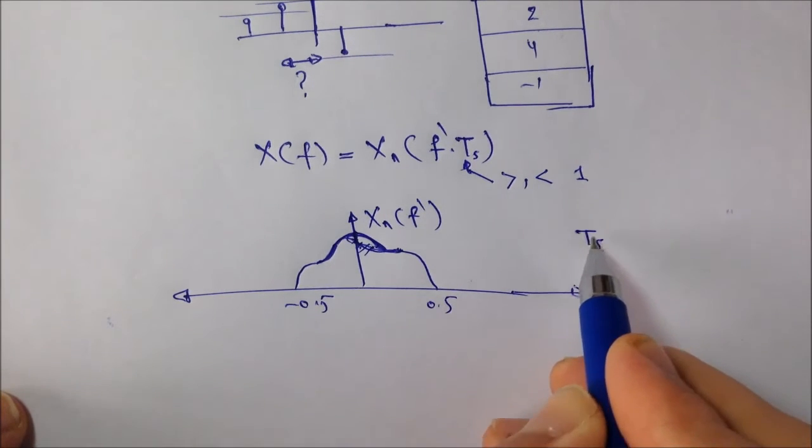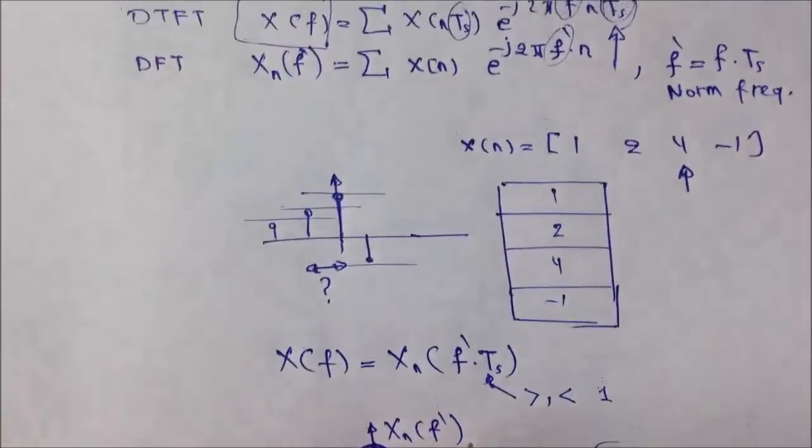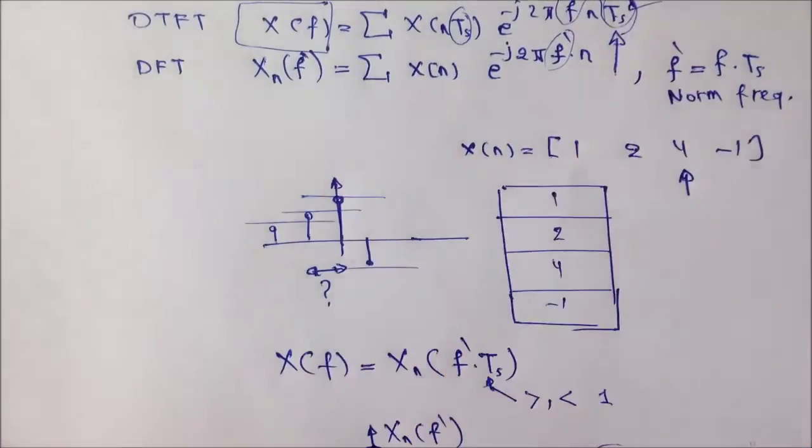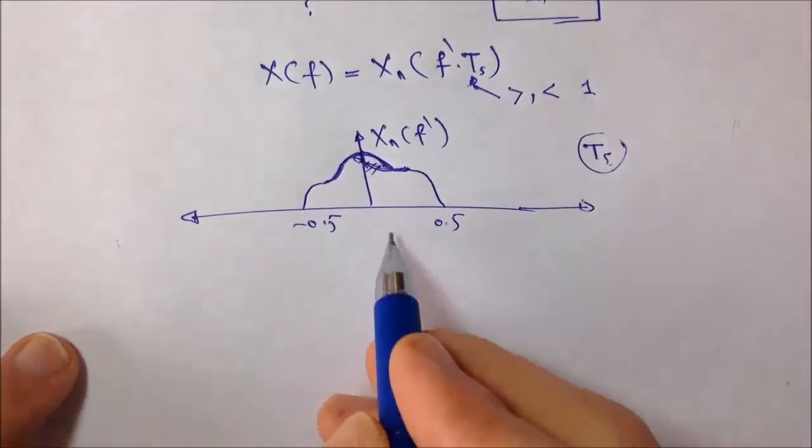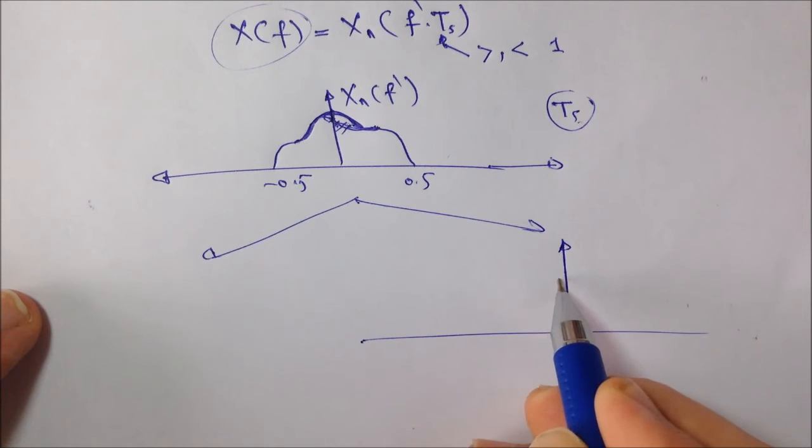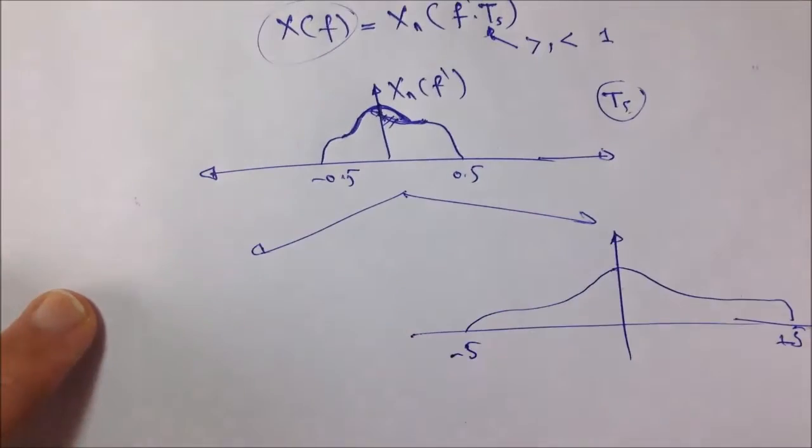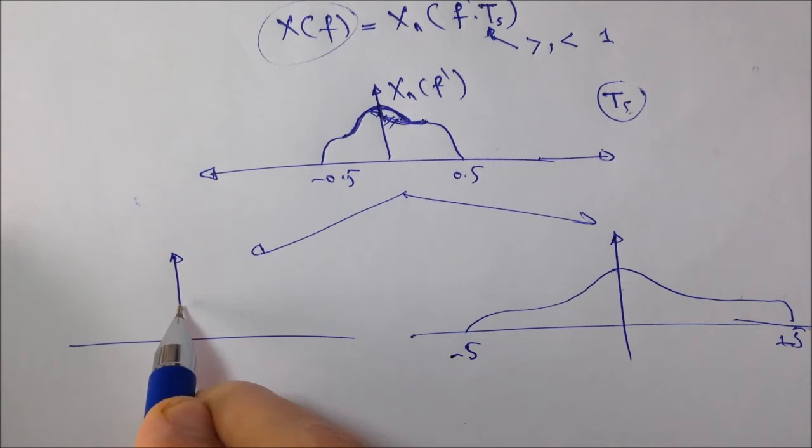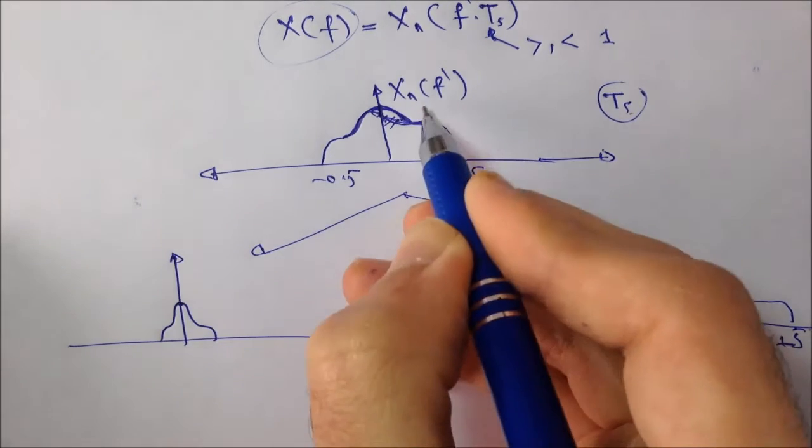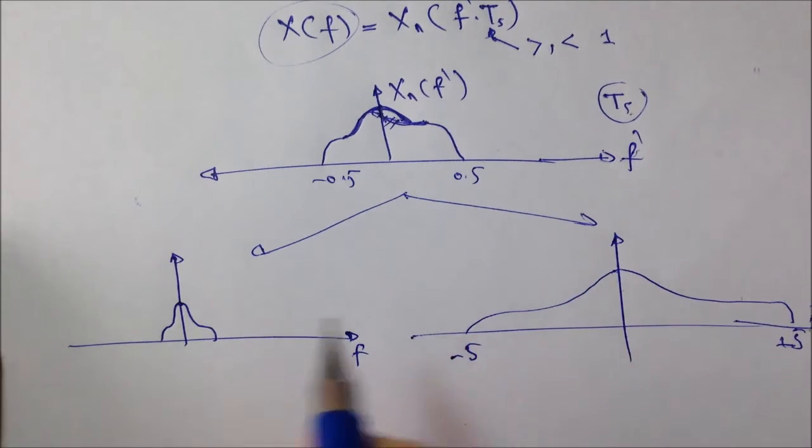And then, somehow, we found out the value of Ts. Can we use the value of Ts with the normalized spectrum to extract the original spectrum given Ts value? Well, yes, according to this relation, the actual X(f) can either look like this, from minus 5 to plus 5. So, it is an expanded version of this. Or, it may look like this, which is a contracted version of the normalized spectrum, which depends on the value of Ts. If it's larger than 1 or less than 1.